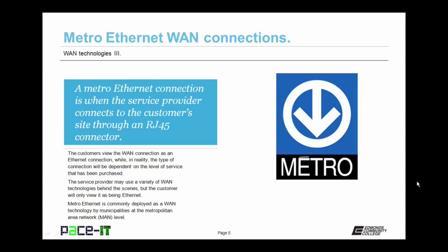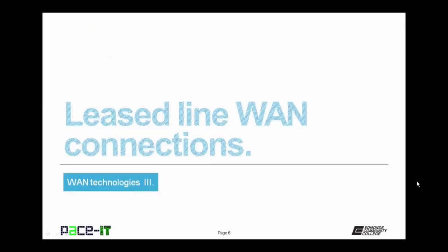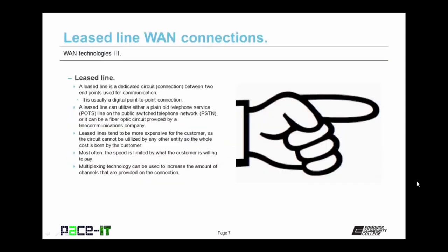The service provider may also use a variety of different wide area network technologies behind the scenes, but the customer will always view it as being an Ethernet connection. Metro Ethernet is commonly deployed as a wide area network technology by municipalities at the Metropolitan Area Network — or MAN — level. It's time to discuss Leased Line WAN connections. A leased line is a dedicated circuit or connection between two endpoints used for communication.